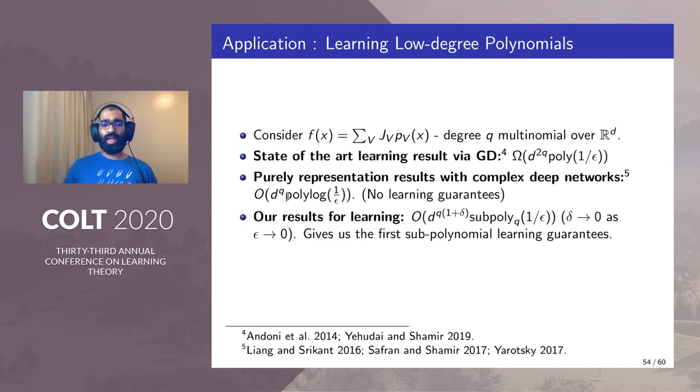We bridge this gap by considering by giving a guarantee for learning which is subpolynomial in 1/ε. Here we mean what we mean by subpolynomial is that it can be made smaller than any polynomial in 1/ε. This gives us the first subpolynomial guarantees for this problem.